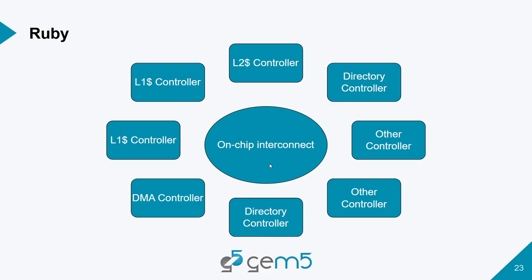Inside Ruby there are a bunch of controllers — a different controller for each type of cache: L1 controller, L2 controller, directory controller, DMA controller. You specify all the details of these controllers and how they interact. Then you connect them with an on-chip interconnect, and in theory any protocol can work with any interconnect within Ruby.